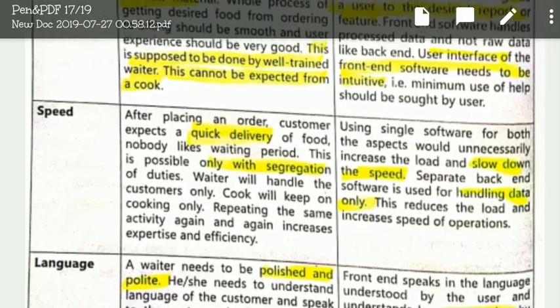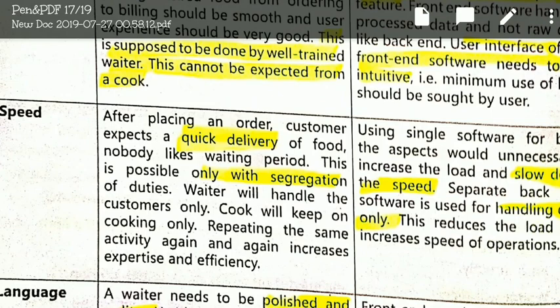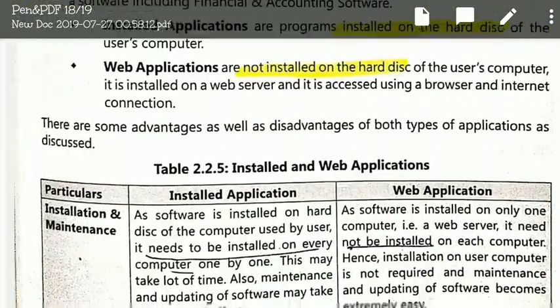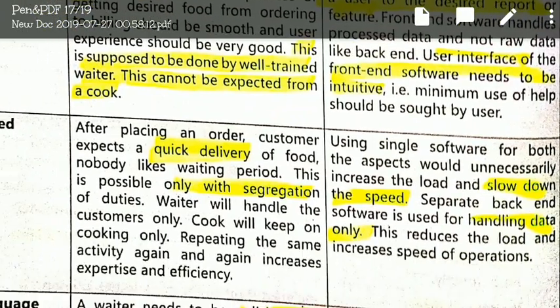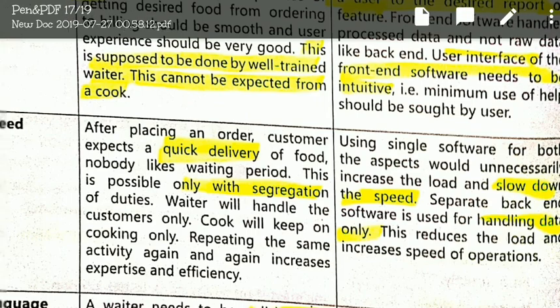Regarding speed: after processing, the customer expects quick delivery. But it takes time to make food. If the same person both cooks and delivers, it takes even longer, slowing down operations. To maintain speed, if the front-end had to store and process all data by itself, the speed would slow down. That is why a separate back-end software is used for handling data only — this reduces the load and increases the speed of operations.